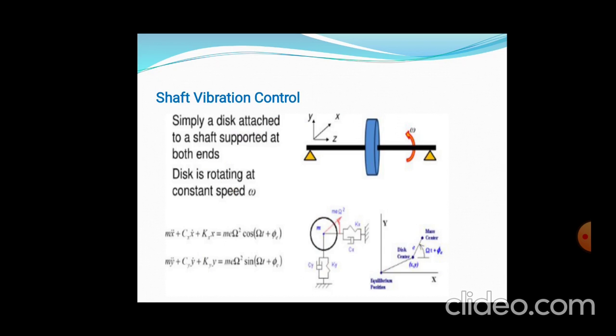A mechanical example is shaft vibration control. Two bearings support a shaft, with a disc mounted between them. With rotation, the shaft vibrates in vertical upward and downward directions at angular velocity omega. The governing equation is: m*x_double_dot + c*x_dot + k*x = m*e*omega²*cos(omega*t + phi). This covers the control of vibrations.